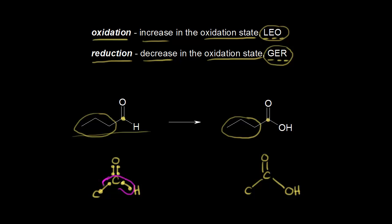Carbon is more electronegative than hydrogen, so we assign both of those electrons to carbon. Oxygen is more electronegative than carbon, so oxygen takes all four of those electrons. For carbon versus carbon, we assume they have the same electronegativity, so we split those two electrons — one electron to each carbon. This carbon is surrounded by three electrons. Carbon is supposed to have four valence electrons, so four minus three gives us an oxidation state of plus one. This carbon on the left has an oxidation state of plus one.